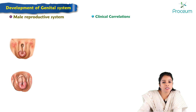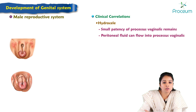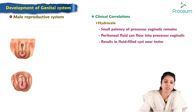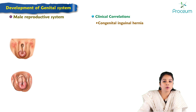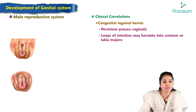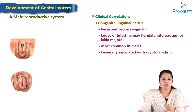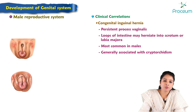Congenital hydrocele of the testis is due to patency of the processus vaginalis, allowing peritoneal fluid to flow into it, resulting in a fluid-filled cyst near the testis. Congenital inguinal hernia may result due to a persistent processus vaginalis, where loops of intestine may herniate into the scrotum or labia majora. It is most common in males and is generally associated with cryptorchidism. This completes the development of the male reproductive system.